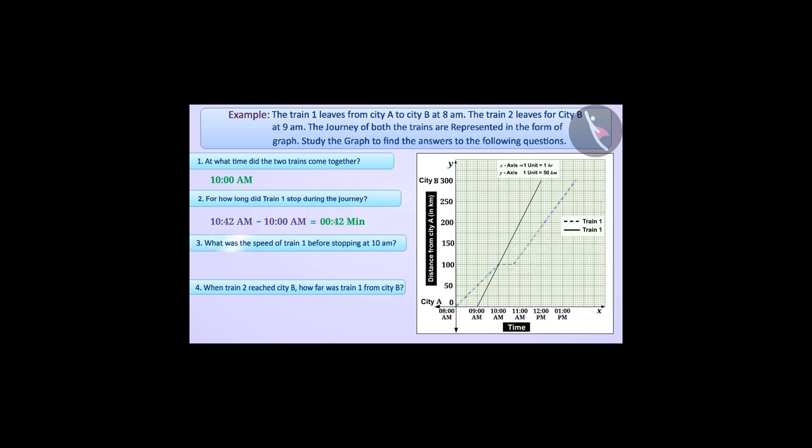What was the speed of train 1 before stopping at 10 a.m.? Train 1 covered a distance of 100 km in 2 hours before stopping. The speed of train 1 before stopping was 100 km per 2 hours, equal to 50 km per hour.